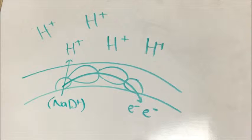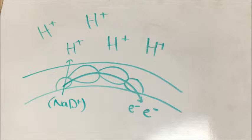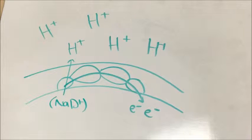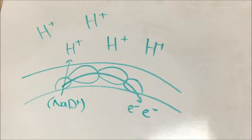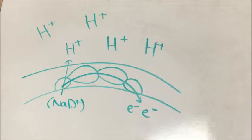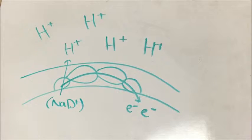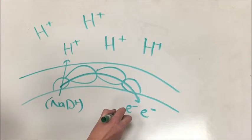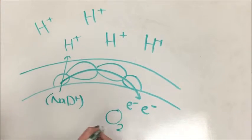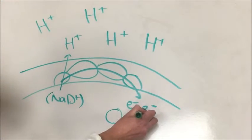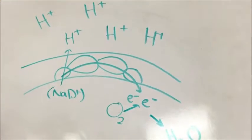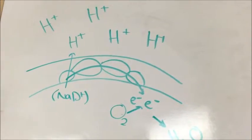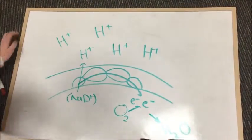The electron transport chain will continue to produce a gradient until the energy to move against the gradient is greater than the energy produced by the electron transport chain. Once electrons have moved to the end of the electron transport chain, they jump from the final protein to oxygen to produce water. This transfer of electrons allows the chain to accept another electron and continue functioning. This is also the reason that we breathe oxygen. Prokaryotic cells can also use other electron acceptors, but oxygen is the most effective.